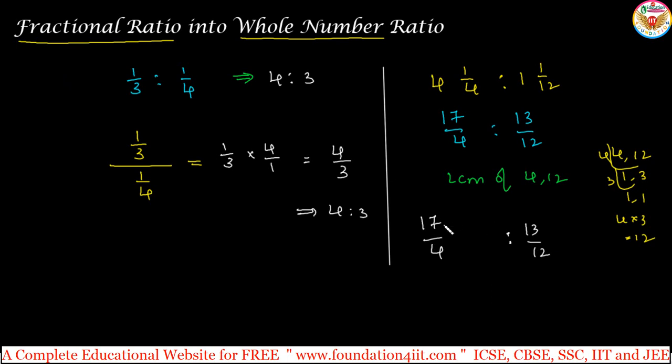LCM is 12. Just multiply with 12. That means any ratio if you multiply or divide with same number, ratio does not change. Based on this you can cancel, 4 times 1, 4 times 3 and 12, 12. 17 into 3 here, 51 is to 13. 4, 1 by 4 is to 1, 1 by 12 is 51 is to 13.